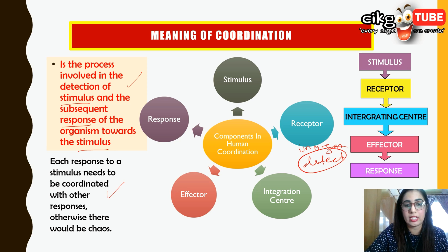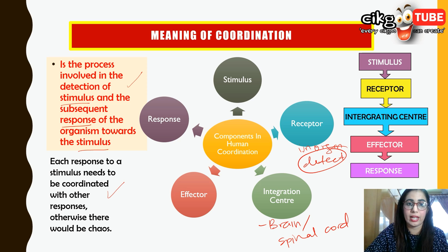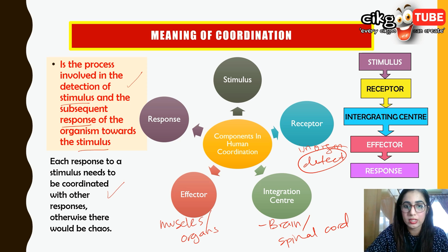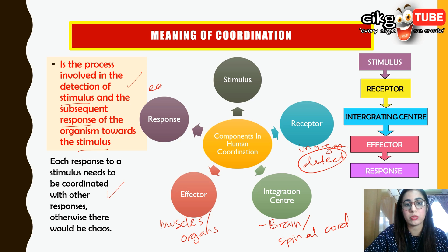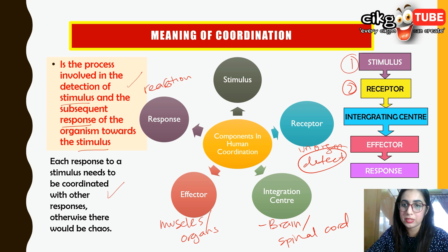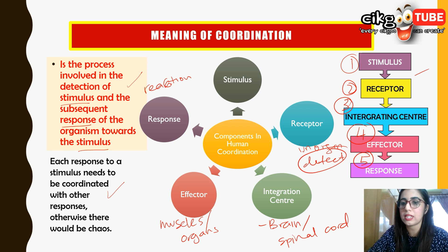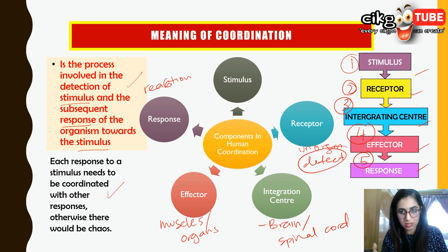The effector is the muscles or organs that produce a response when stimulated by nerve impulses. Response is the reaction of the organism towards the stimulus. The overall flow is: stimulus → receptor → integration center (which processes the information) → effector → response. This same flow applies to all kinds of coordination, which we will see further in this subtopic.